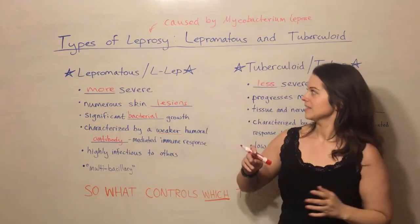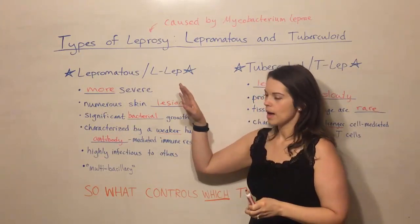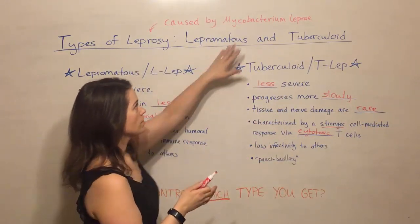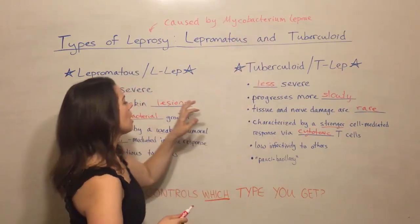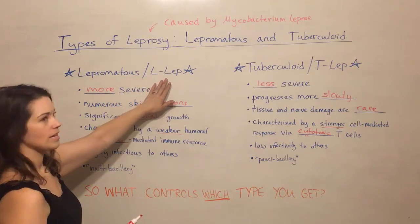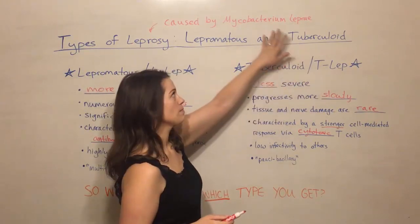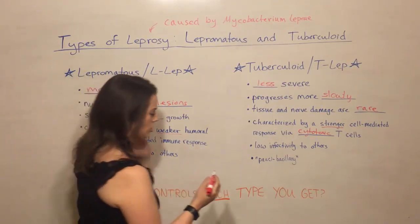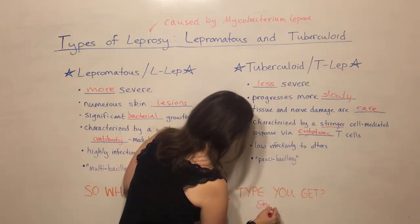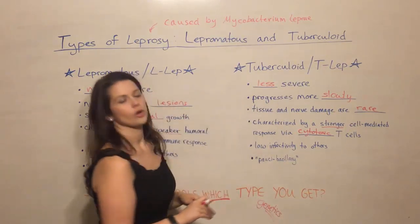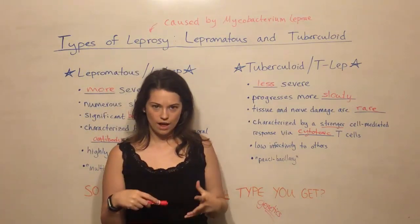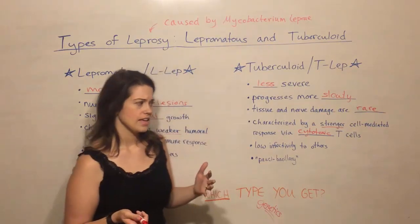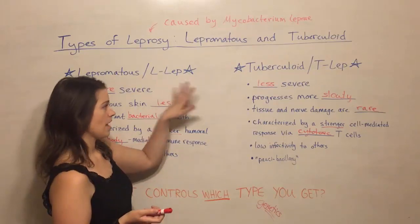You might be asking yourself: what leads to L-LEP versus T-LEP? Because they are the same pathogen — both are caused by Mycobacterium leprae. It turns out that what controls whether a person develops L-LEP or T-LEP during a Mycobacterium leprae infection is actually their genetics. A person's particular genetic profile — which genes they have, which genes are active versus inactive — is what controls whether they will proceed with L-LEP or T-LEP.